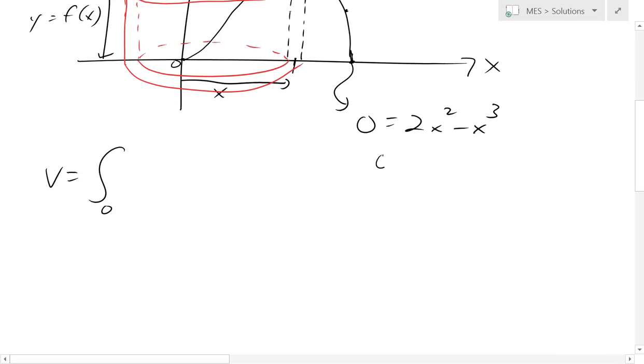And now this one, when we solve this, this equals, just factor this out, x squared times 2 minus x. So this function is 0 when you have x equals 0, and when you plug in basically 2 there. So this value is 2.